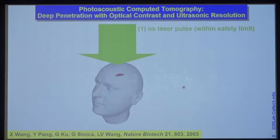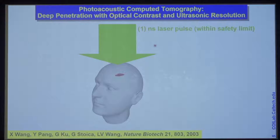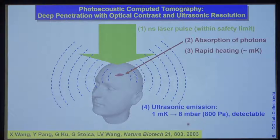In photoacoustic tomography, we first use a nanosecond laser pulse. We expand the laser beam such that the energy per area, or the radiant exposure, is within the safety limit. We allow photons to scatter around or to diffuse deeply into biological tissue to excite acoustic waves. Every milli-degree of temperature rise gives you roughly 800 Pascals of pressure, which is detectable with a reasonably good SNR. In fact, you can heat up hundreds of milli-degrees and you're still within the safety limit, and you get a very good SNR to work with.